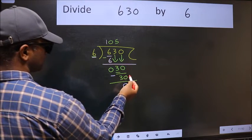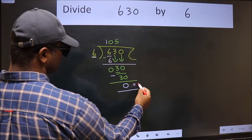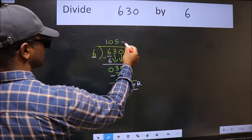No more numbers to bring it down, so we stop here. This is our remainder and this is our quotient.